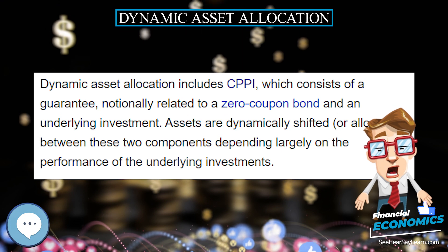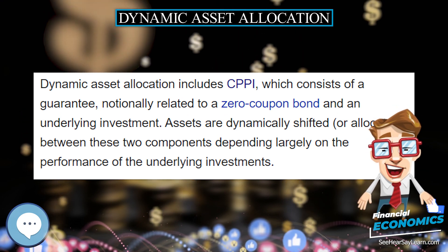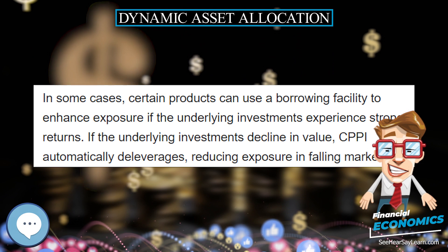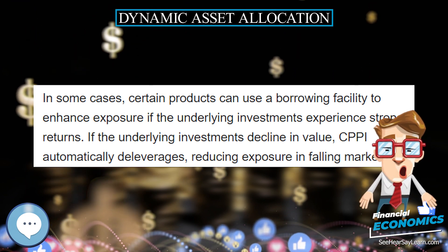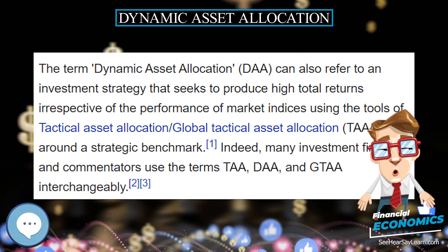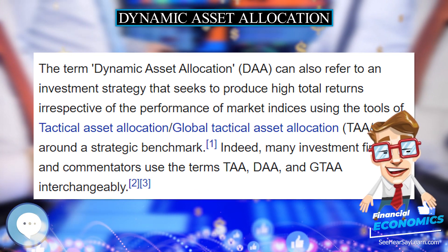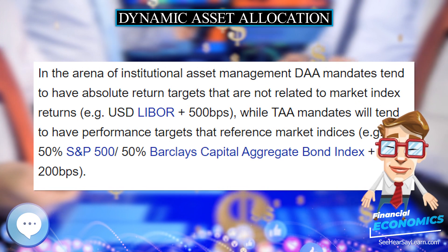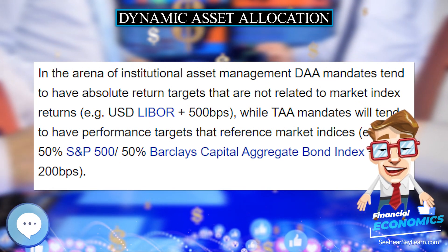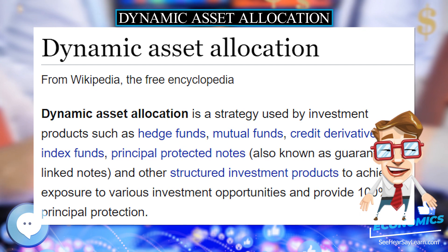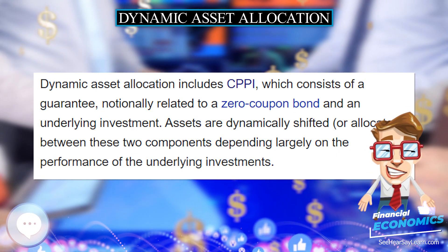Dynamic Asset Allocation includes CPPI, which consists of a guarantee notionally related to a zero-coupon bond and an underlying investment. Assets are dynamically shifted, or allocated, between these two components depending largely on the performance of the underlying investments. In some cases, certain products can use a borrowing facility to enhance exposure if the underlying investments experience strong returns.